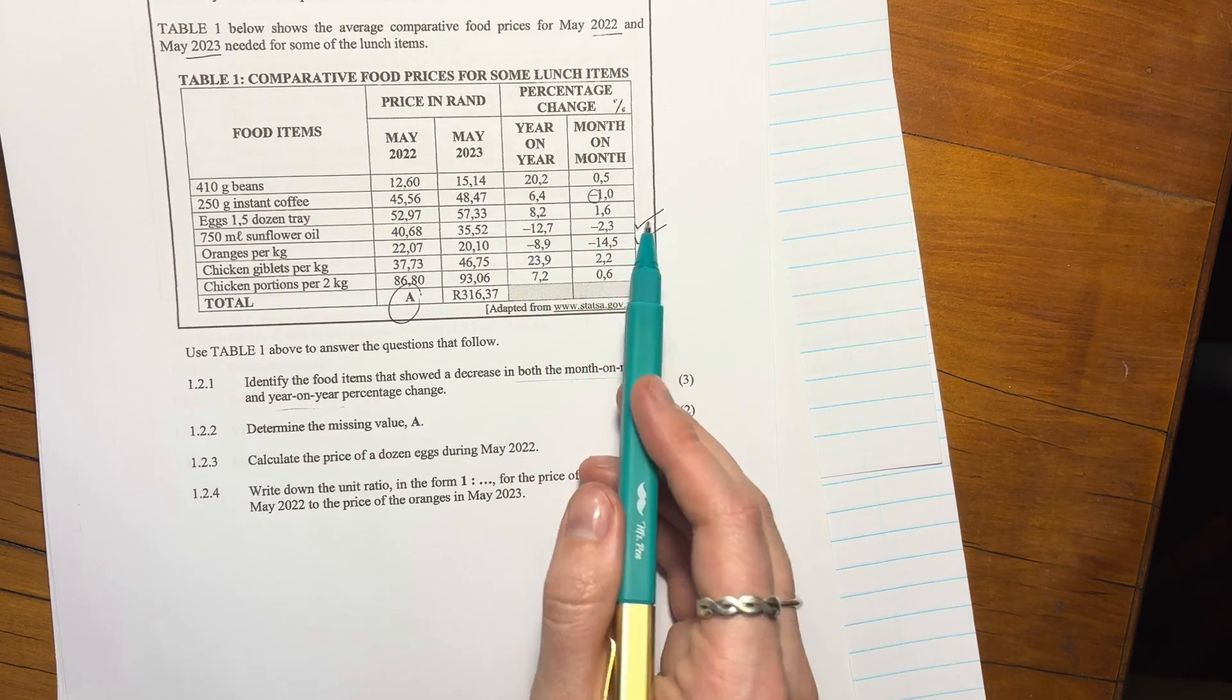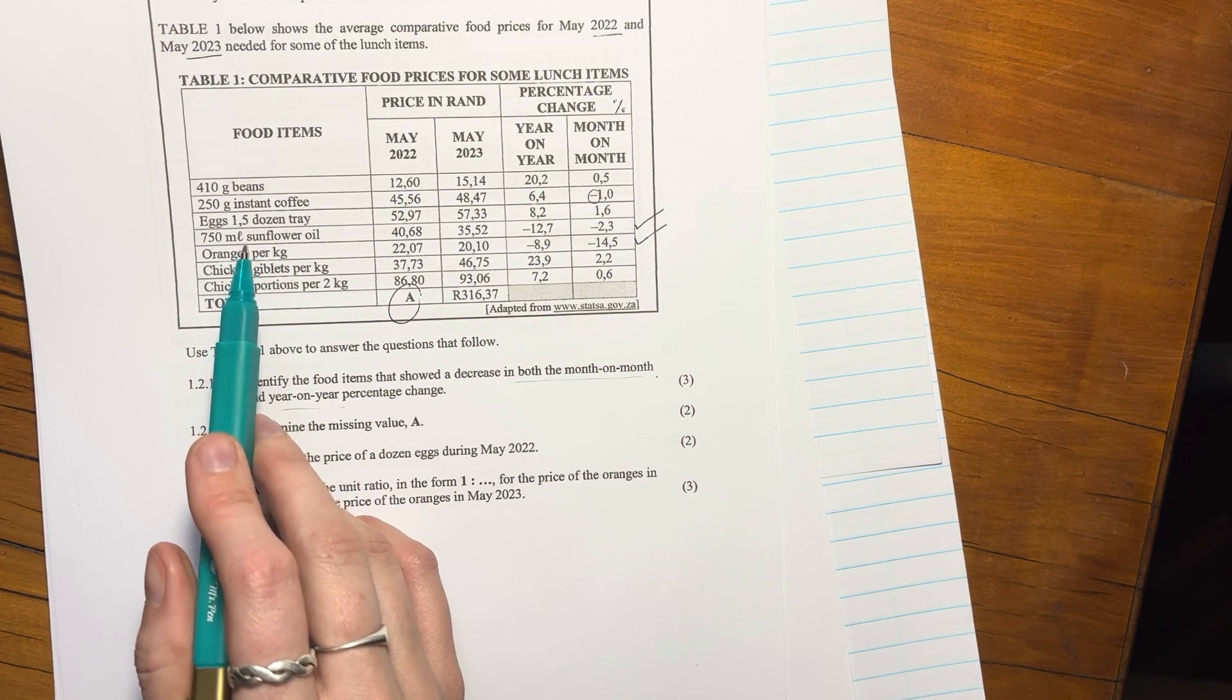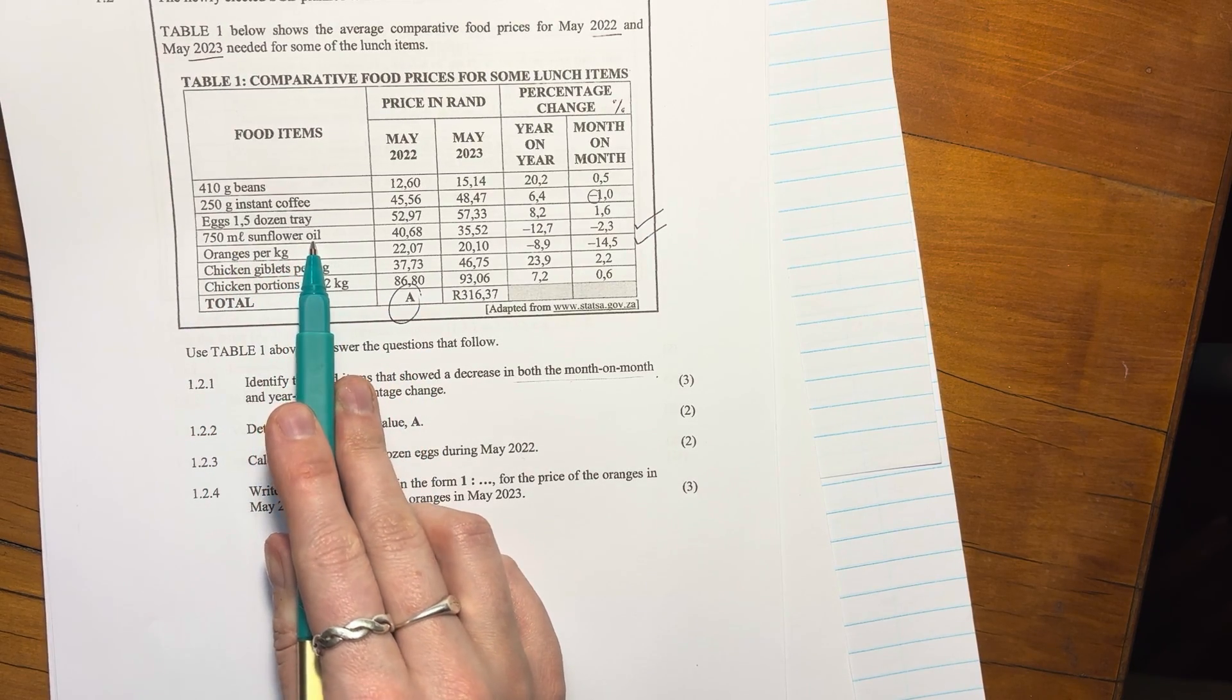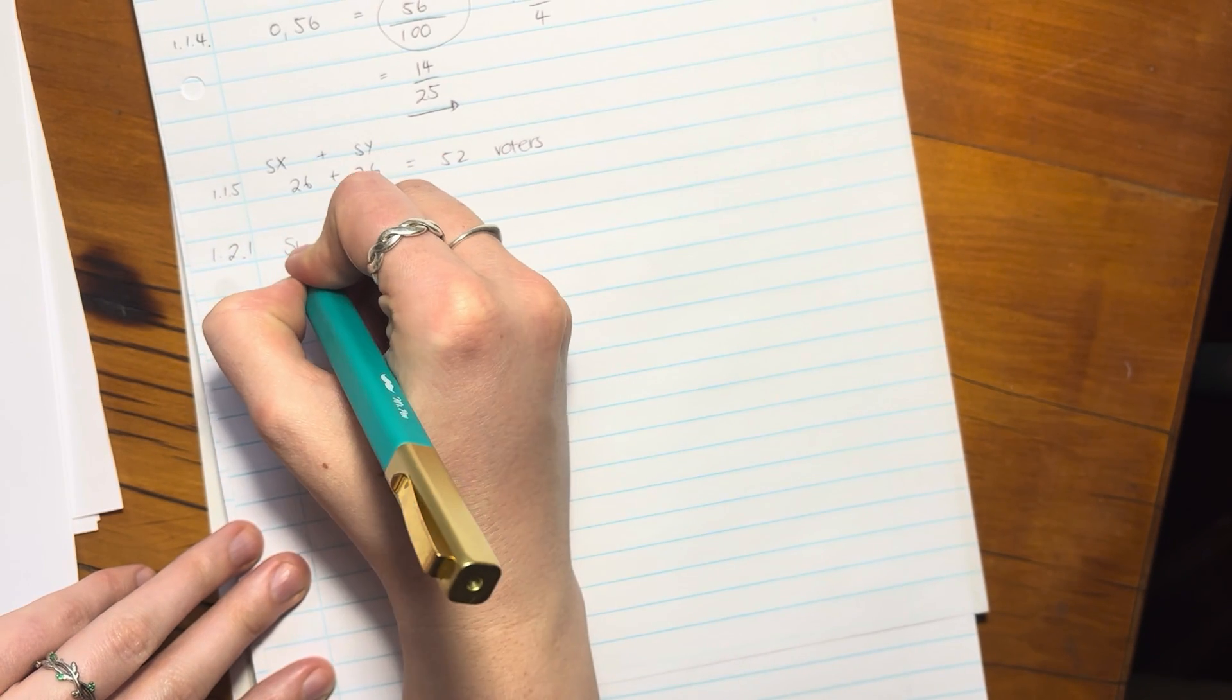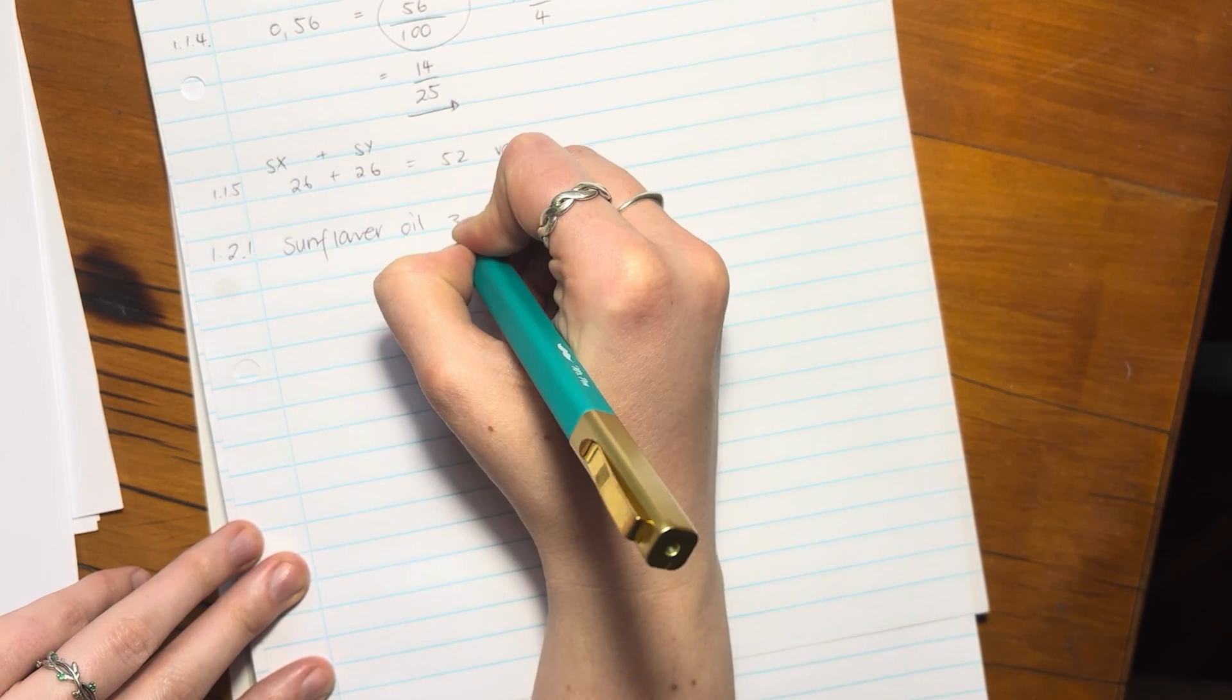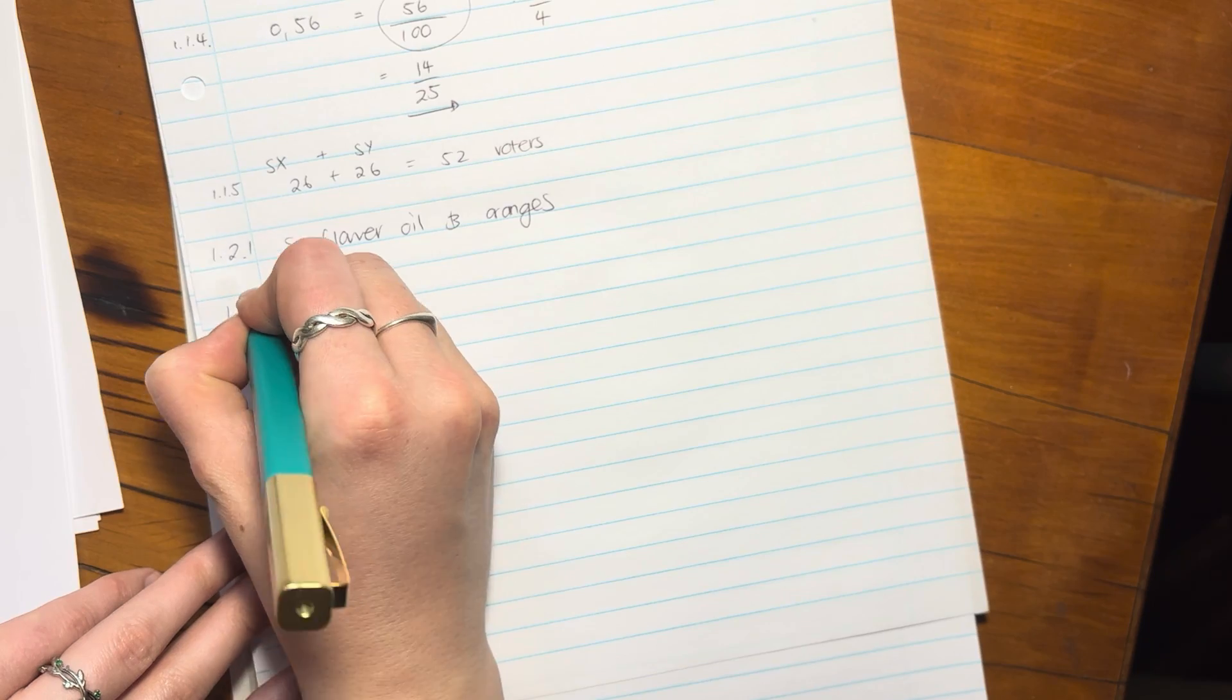It showed a decrease in both the month to month and the year to year, so basically both of these have to be negative. The rest of these are positive, so it's just these two. What is it? The sunflower oil and the oranges. You don't have to say the per kg whatever, you just have to say sunflower oil and oranges.